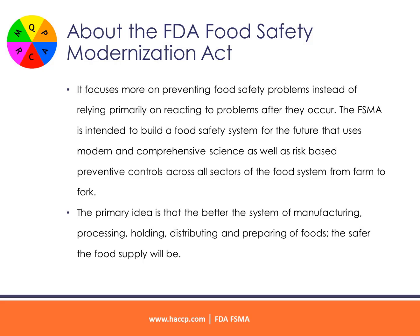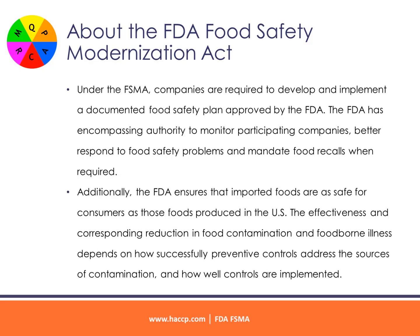The FSMA is intended to build a food safety system for the future that uses modern and comprehensive science as well as risk-based preventive controls across all sectors of the food system from farm to fork. The primary idea is that the better the system of manufacturing, processing, holding, distributing, and preparing of foods, the safer the food supply will be. Under the FSMA, companies are required to develop and implement a documented food safety plan approved by the FDA. The FDA has encompassing authority to monitor participating companies, better respond to food safety problems, and mandate food recalls when required. Additionally, the FDA ensures that imported foods are as safe for consumers as those foods produced in the U.S.